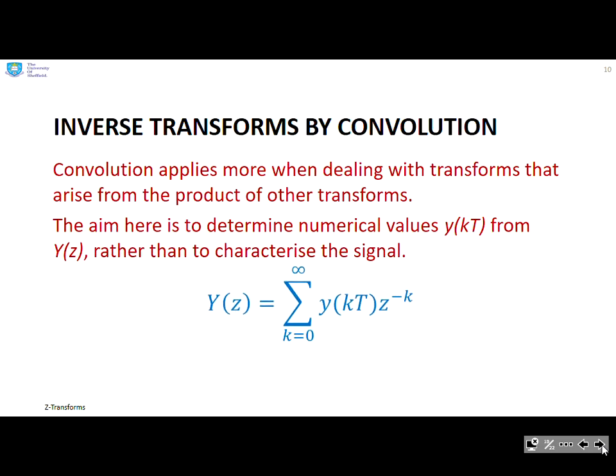Convolution. Convolution is another way for doing inverse Z-transforms. This is something you will often want to use when the transform you've got is a product of several transforms. The key thing here is the focus now is on numerical values, not analytic values. We want to find a number for y(kT).